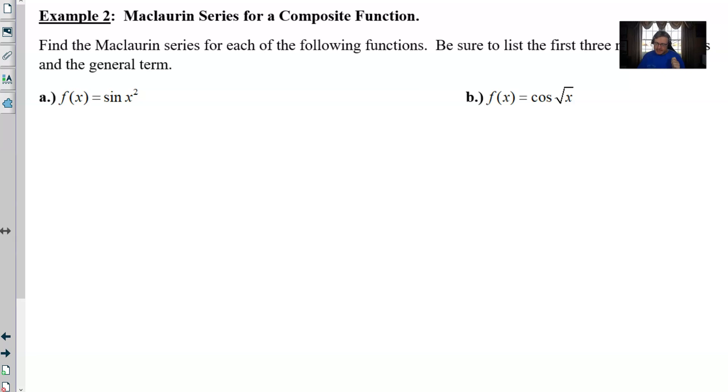So let's do it. Let's look at our problems here. Example two, finding the Maclaurin series for each of these following functions. And it says, be sure to list the first three non-zero terms and the general term, which again, very common thing to do on the AP exam. So sine of x squared. Let me think about this.